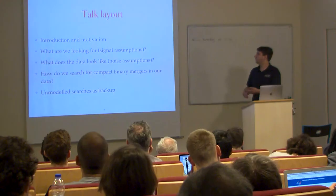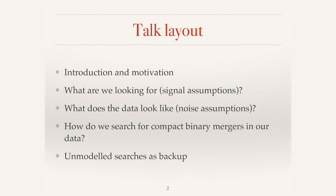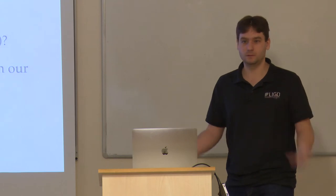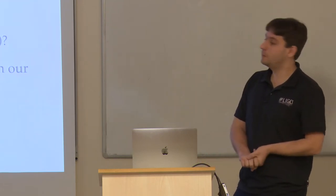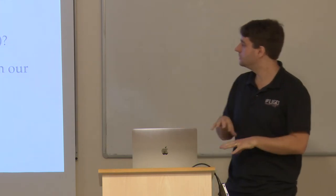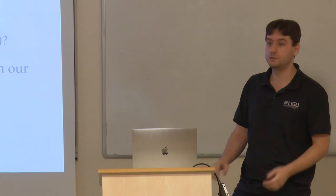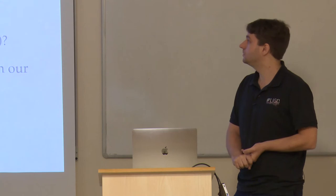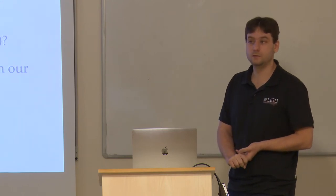Let me give a brief outline. I'll start with an introduction, then try to approach this somewhat pedantically — discussing what we're assuming about the signal when we do these searches, what we assume about the noise, what our data looks like, and how we use this information. Then I'll explain how all of this is tied together to perform an actual search for compact binary mergers, and finish with some unmodelled searches.